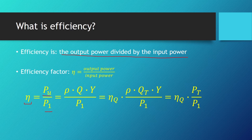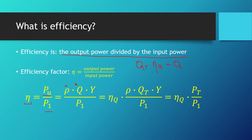We can write the useful power as density times flow times the effort of the pump. Because this is our real average flow, we can write it as Q_t times the efficiency factor of flow — since the real average flow equals theoretical flow times the flow efficiency factor. So we write eta_q times density times theoretical flow times the effort of the pump divided by P1, and this is actually theoretical power.